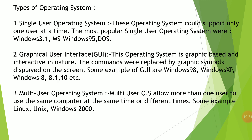Next, the types of operating system. We have many types. The first is the single-user operating system — by name it is clear — these operating systems support only one user at a time. The most popular single-user operating systems are Windows 3.1, MS-Windows 95, MS-DOS, and many more.